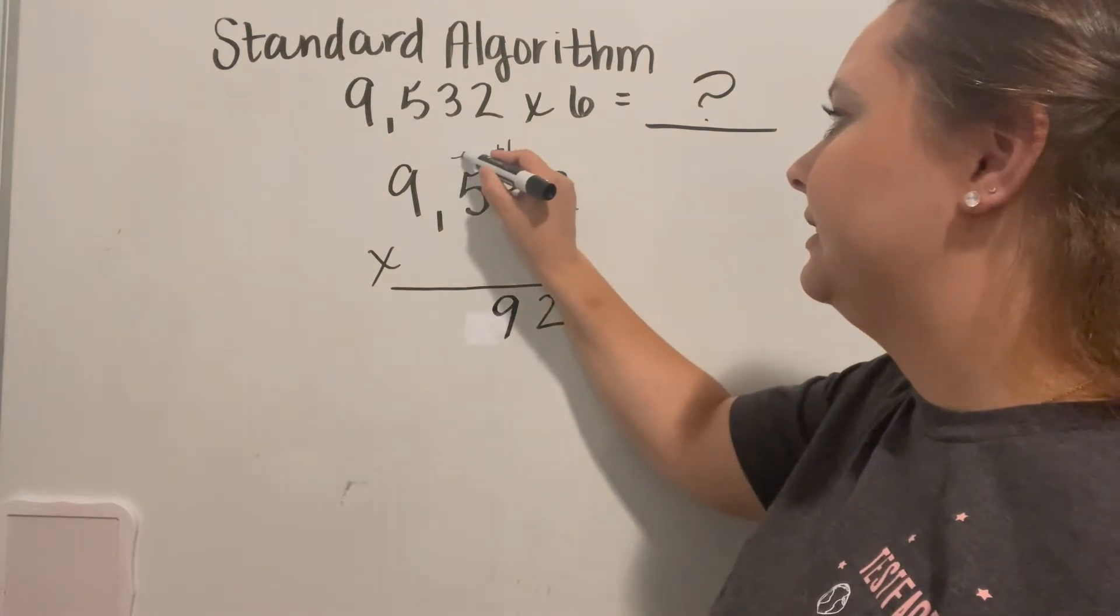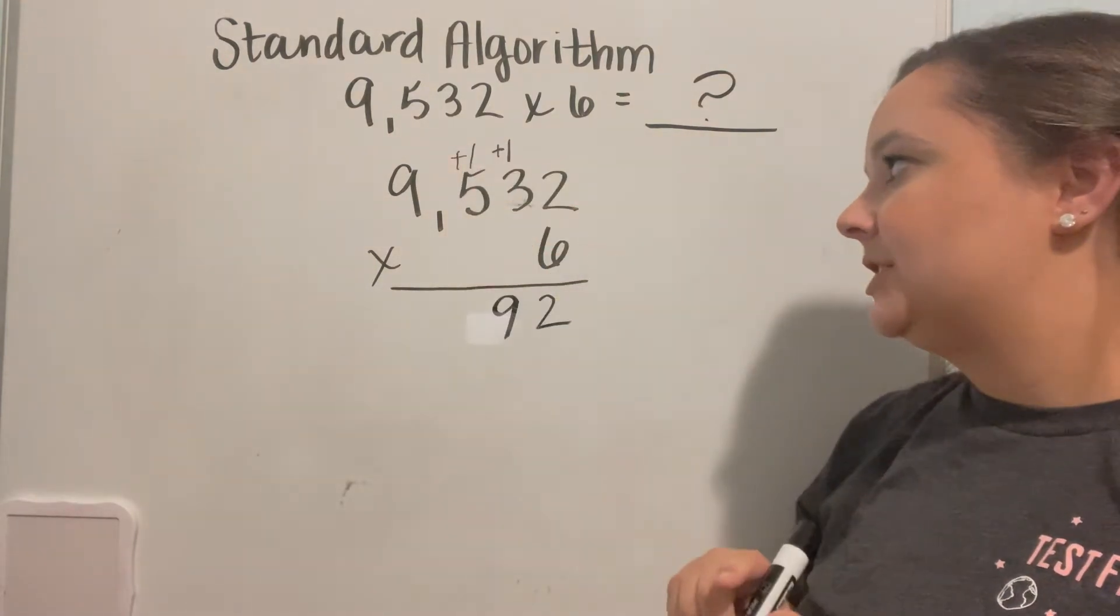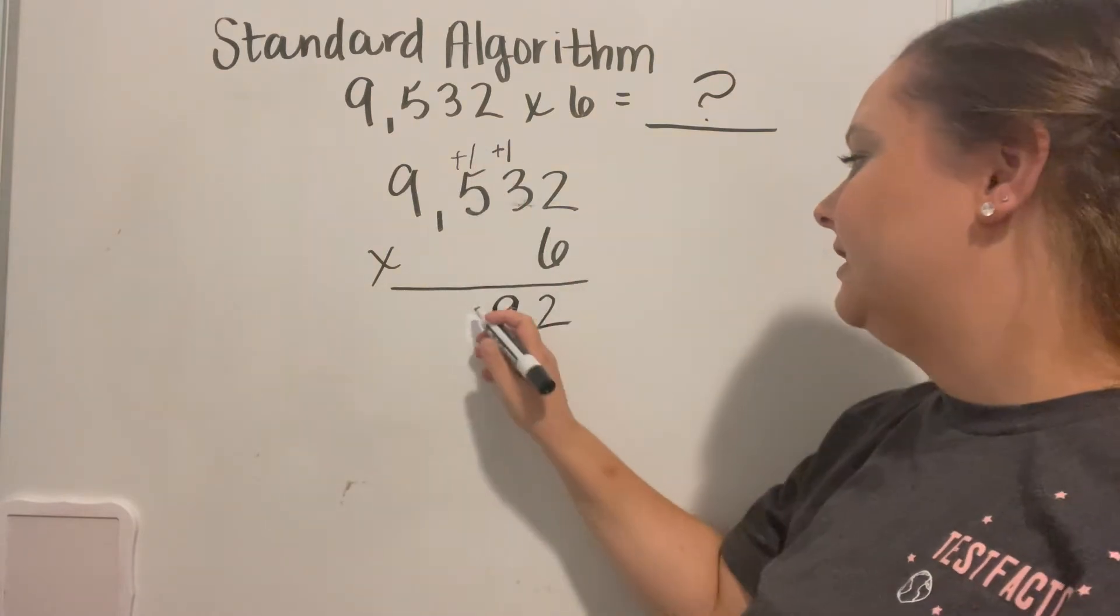I'm going to again carry a 1. Now we have 5 times 6, which gives me 30 plus the 1 that I carry gives me 31.